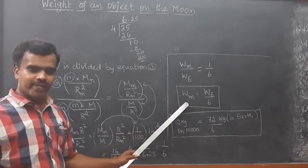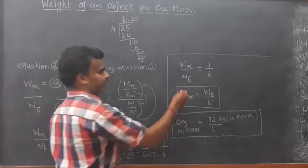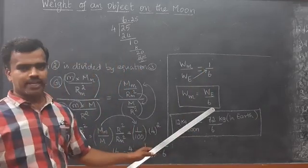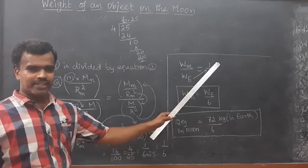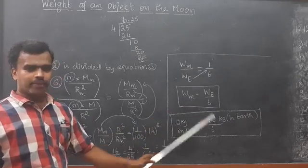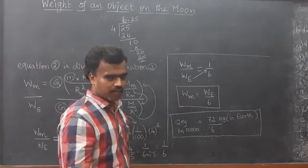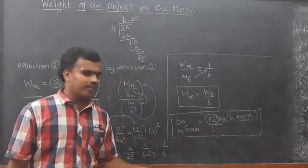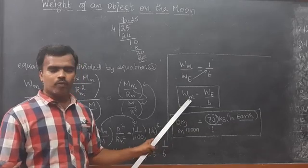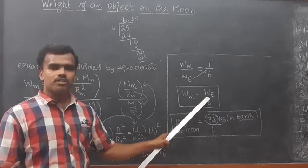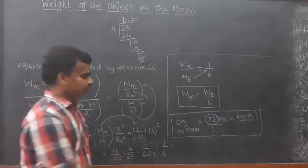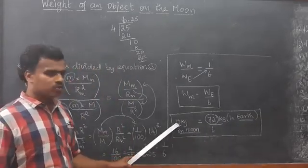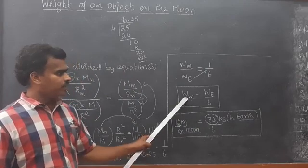Therefore, the weight on the moon is equal to the weight on the earth divided by 6. For example, if my weight on earth is 72 kg, then my weight on the moon is 72 divided by 6, which is 12 kg. So my weight on earth is 72 kg but my weight on the moon is 12 kg, because 72 divided by 6 gives the weight on the moon.